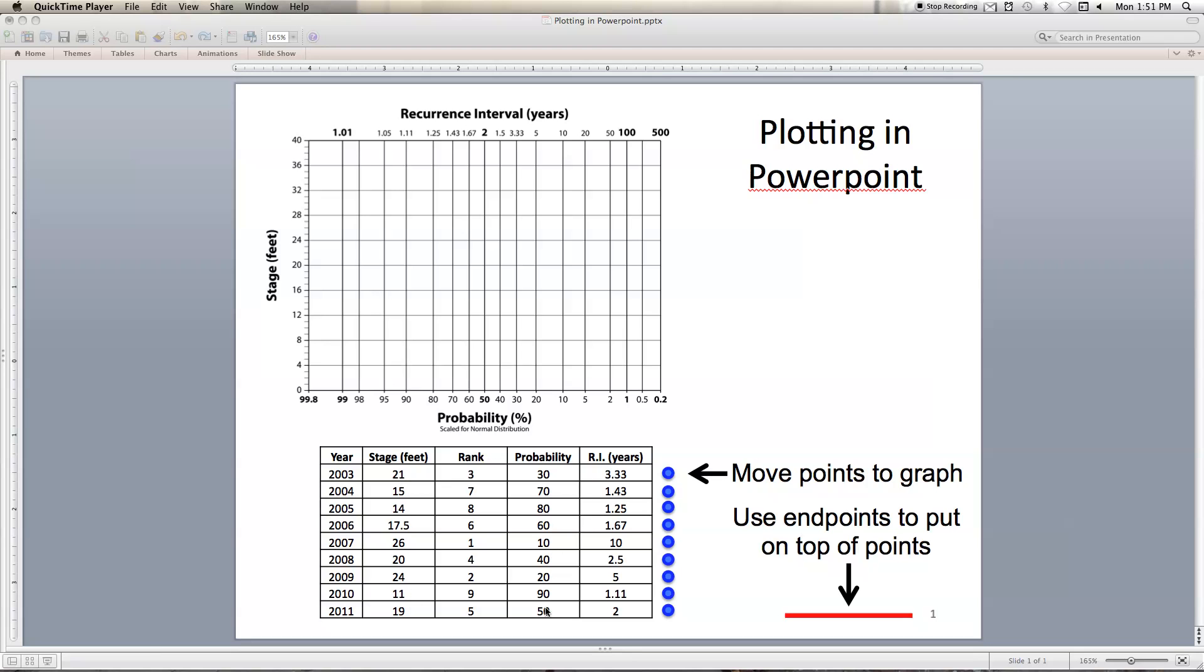This is the odds of these particular floods occurring in a given year. To plot those we have nine different years of data, nine different points. We're just going to go through and grab the data point for each of those particular years and put them in the correct place on the graph paper.